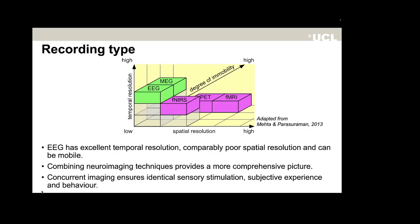Besides temporal and spatial resolution, the degree of mobility has more recently been taken into consideration when evaluating recording techniques. EEG, fNIRS, and also the new MEG system—OPMs—have a high degree of mobility, providing a great opportunity to investigate human brain activity in more naturalistic environments doing more naturalistic tasks. We will come back to these mobile applications later.